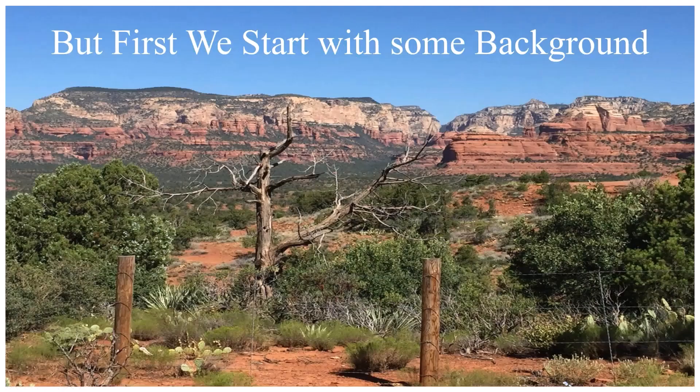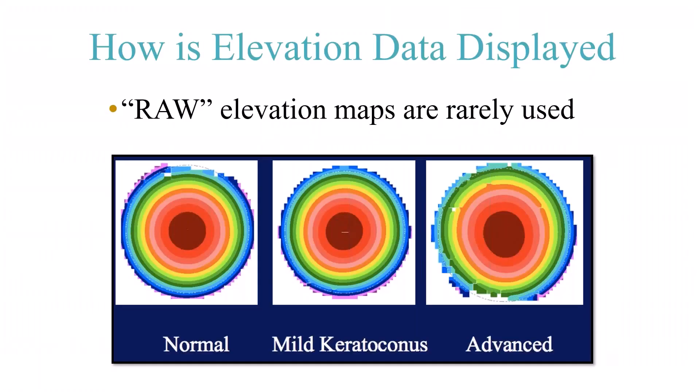We're going to start with some background on elevation tomography. We talk about elevation, but you actually never see true elevation maps. These are the raw elevation maps. The picture on the left is a normal eye, the middle is a mild keratoconic, and the far right is an advanced keratoconic eye. For visual inspection they all look about the same, but this is what the computer uses internally.